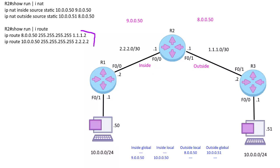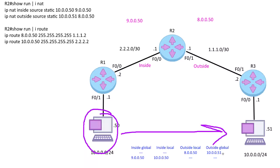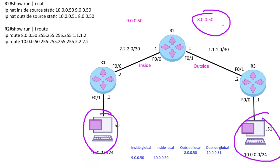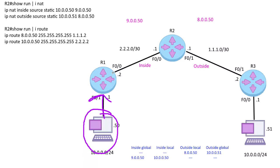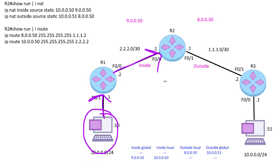Let's walk through an example. This computer needs to ping the machine on the right, which we'll pretend is 8.0.0.50. We chuck it to the default gateway R1, then to R2. First, a route decision happens: destination is 8.0.0.50, go out the next hop 1.1.1.2. Now that routing has happened, translations happen. With a packet destined for 8.0.0.50 flowing from inside to outside, the destination is changed from 8.0.0.50 to 10.0.0.51.